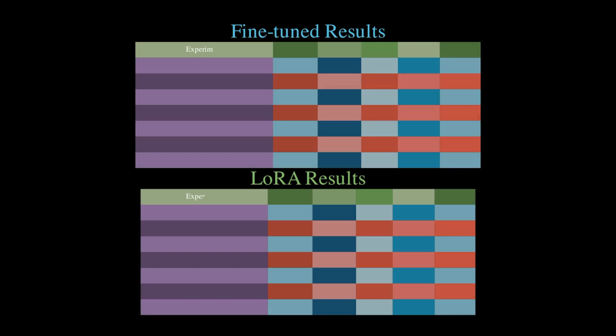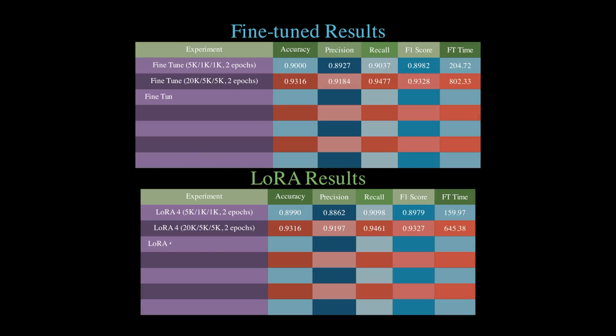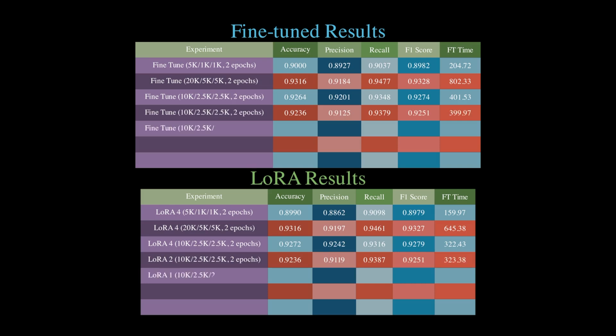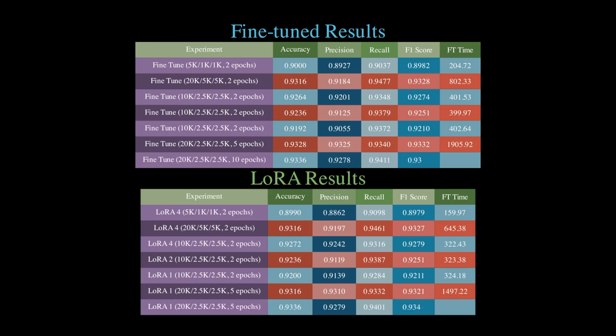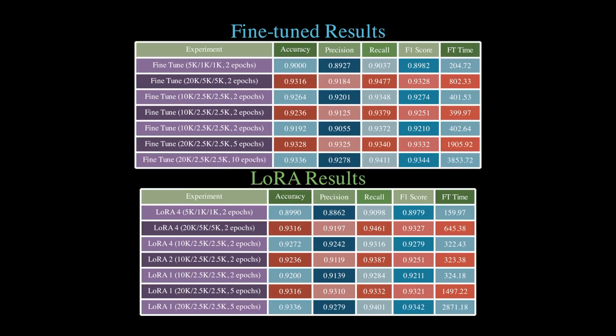So to recap, in this video we explored the power and efficiency of LoRa fine-tuning compared to regular fine-tuning. We saw how LoRa achieves comparable performance to regular fine-tuning while only updating a small fraction of the model's parameters. This parameter-efficient approach not only saves computational resources but also allows for faster iterations and experimentation.